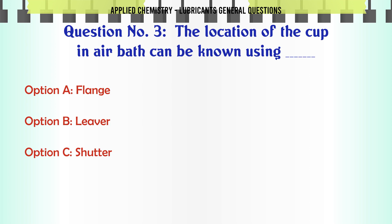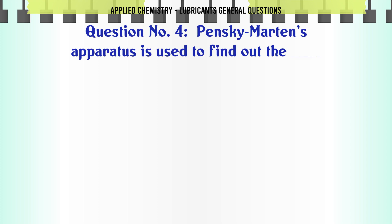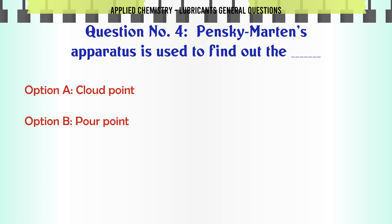The location of the cup in the air bath can be known using: A. Flange, B. Lever, C. Shutter, D. Pilot Burner. The correct answer is Flange.